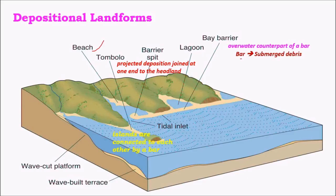A bar is a part of submerged debris found below the overlying debris, and this overlying debris is called a bay barrier. The bay barrier may sometimes enclose a water body called a lagoon, which mainly consists of saline water. One example is Chilka Lake in India, which is separated from the sea by a small barrier.